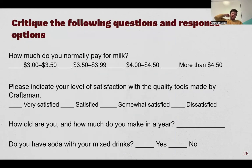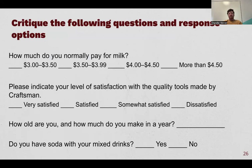Here are some bad question examples from your textbook. 'How much do you normally pay for milk? $3.00–$3.50, $3.50–$3.99...' — the problem is there are two $3.50s, so if you paid exactly $3.50 you could select either, which is an overlap issue. 'Please indicate your level of satisfaction with the quality tools made by Craftsman: very satisfied, satisfied, somewhat satisfied, dissatisfied.' There are only four options with no neutral point, it's not truly bipolar, and the wording 'please indicate your level of satisfaction' implies you should be satisfied. The very/somewhat structure is odd.